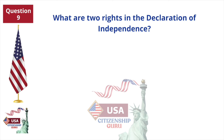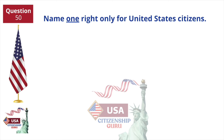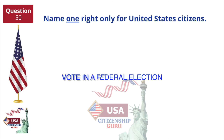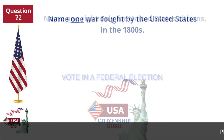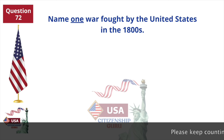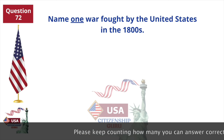What are two rights in the Declaration of Independence? Name one right only for United States citizens. Name one war fought by the United States in the 1800s.